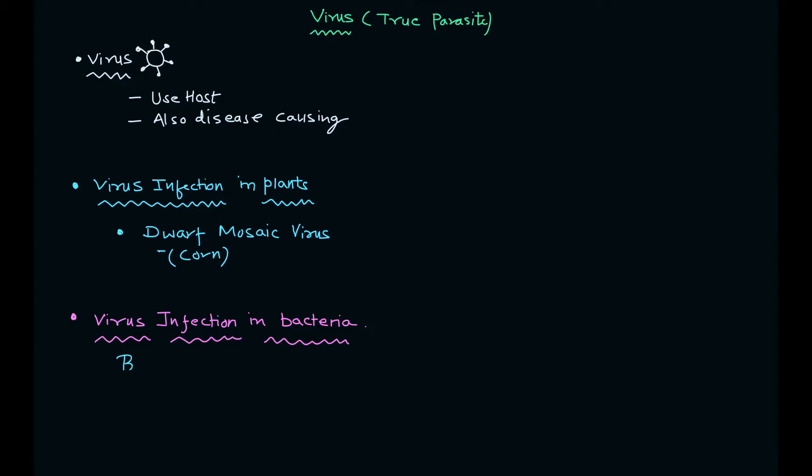Typical examples of bacteriophages include T2, T4, T6—these are all T-even phages. There are numerous phages present in our environment.